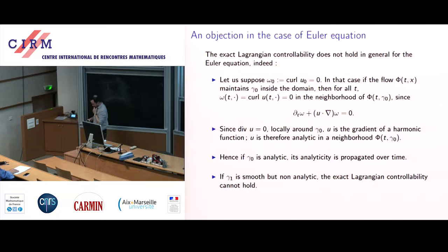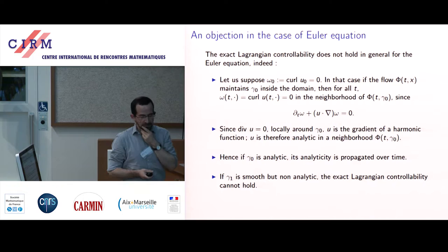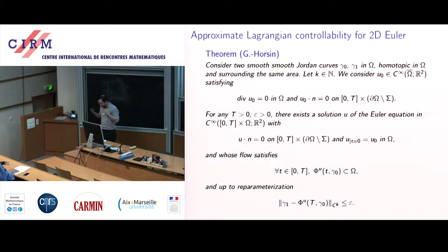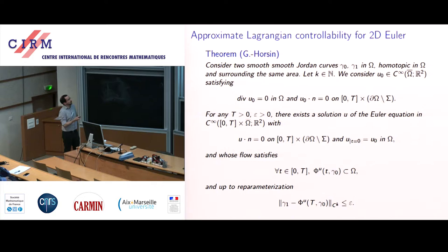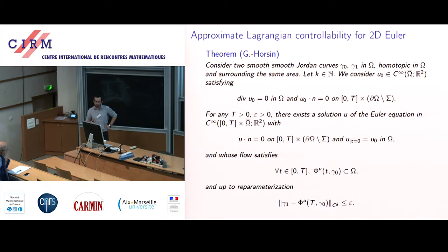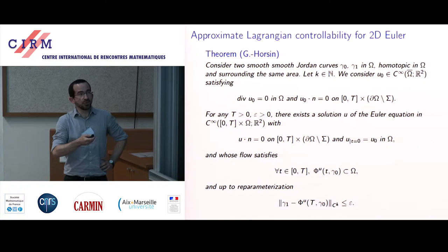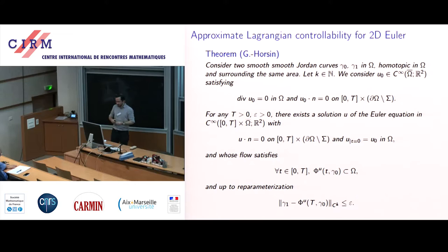So it's a simple argument showing we don't have exact Lagrangian controllability in the general case, but we can reach approximate Lagrangian controllability. For the 2D Euler results we obtained with Thierry Orsini: gamma zero and gamma one are homotopic and enclose the same area, and for some smooth initial datum U₀, you can find a boundary control such that gamma zero stays inside the domain for all time and reaches approximately gamma one with as high precision as you want — K as large as you want and epsilon as small as you want.